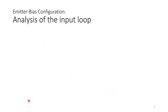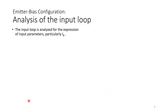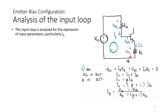Analysis of the input loop: from the DC equivalent circuit, the input loop is analyzed for the expression of input current IB. We draw the input loop consisting of VCC, RB, VBE, and RE. Doing KVL around this loop gives: −VCC + IB·RB + VBE + IE·RE = 0. For a silicon PN junction, VBE is approximately 0.7 V unless stated otherwise.